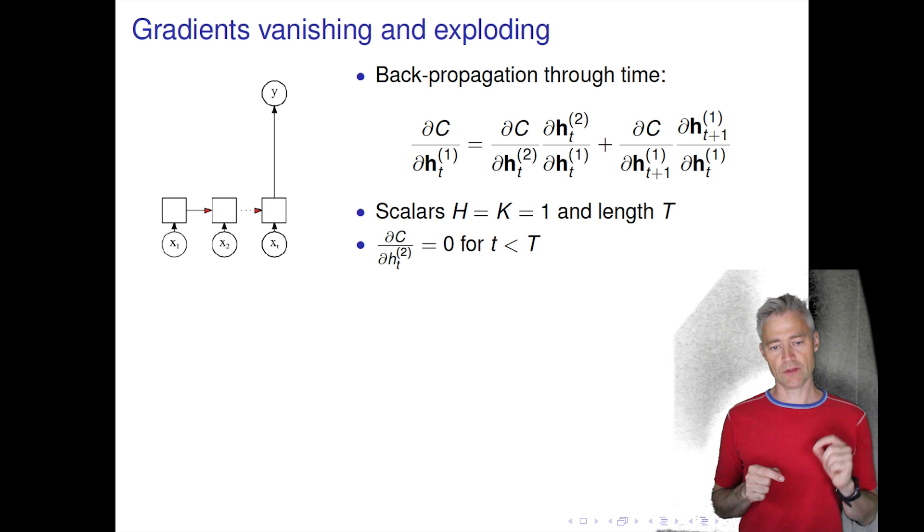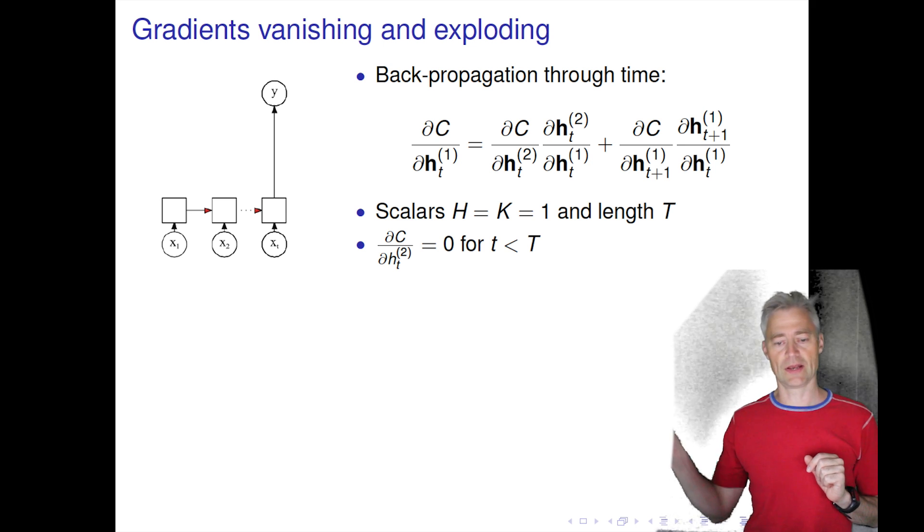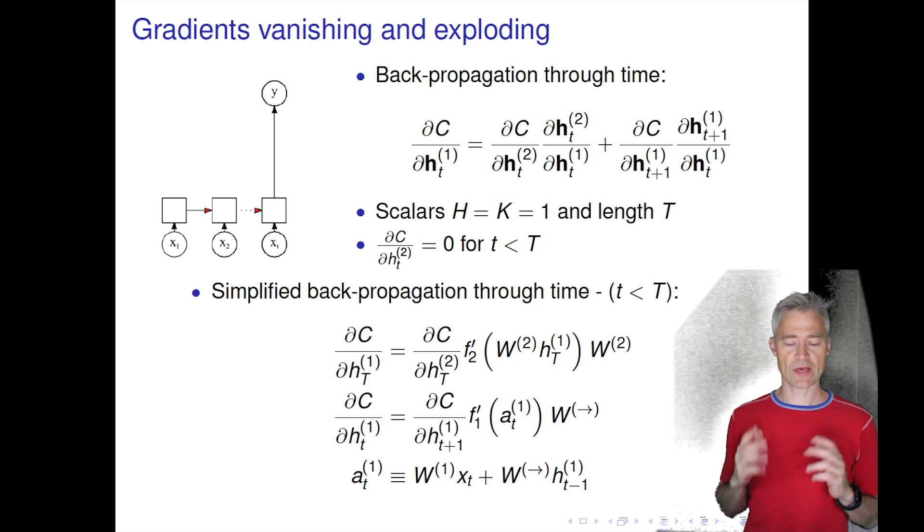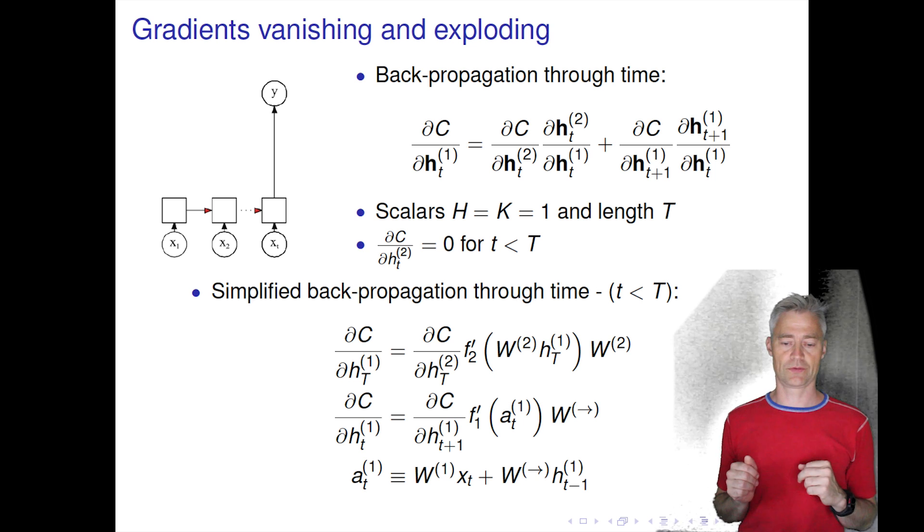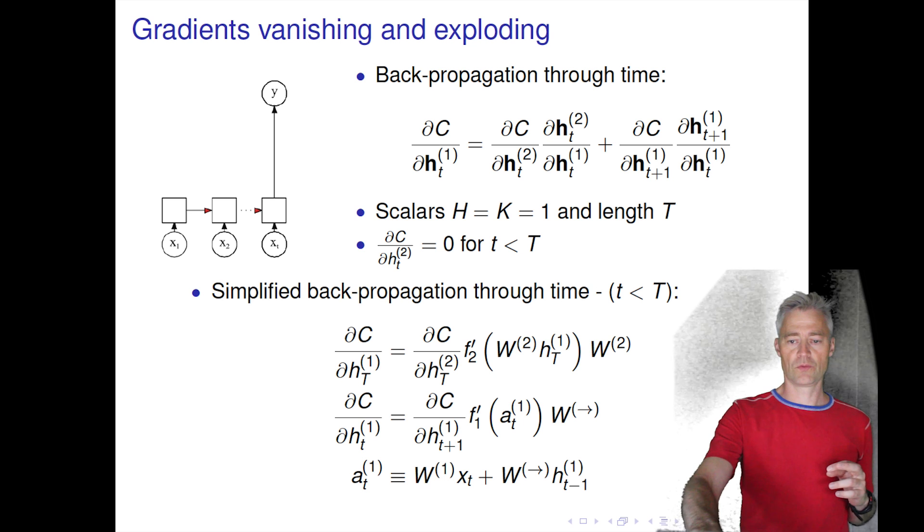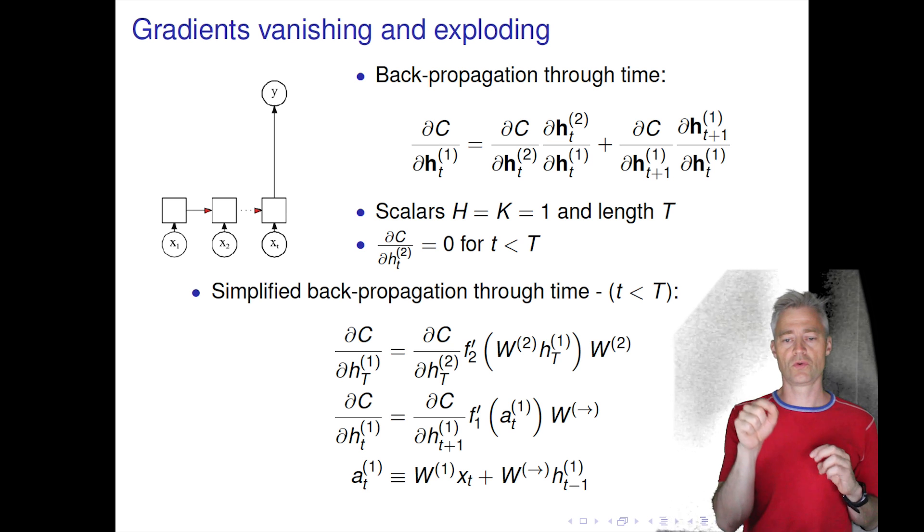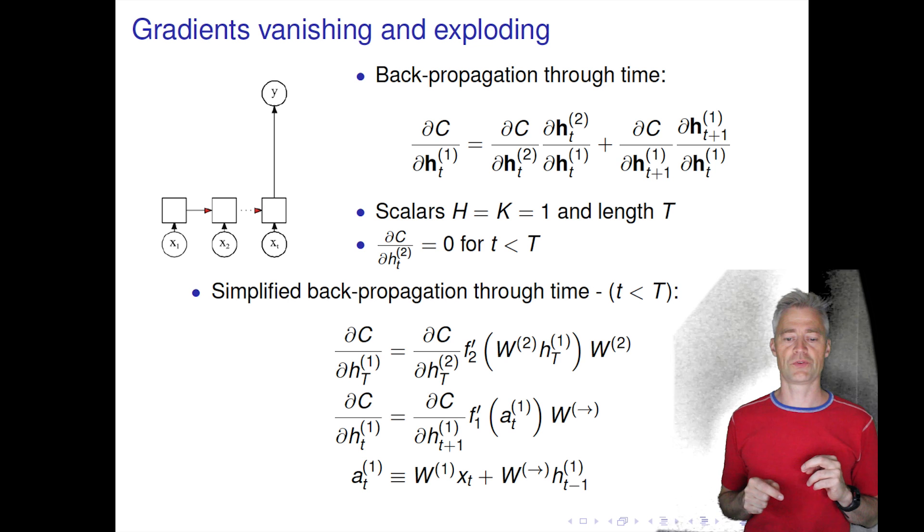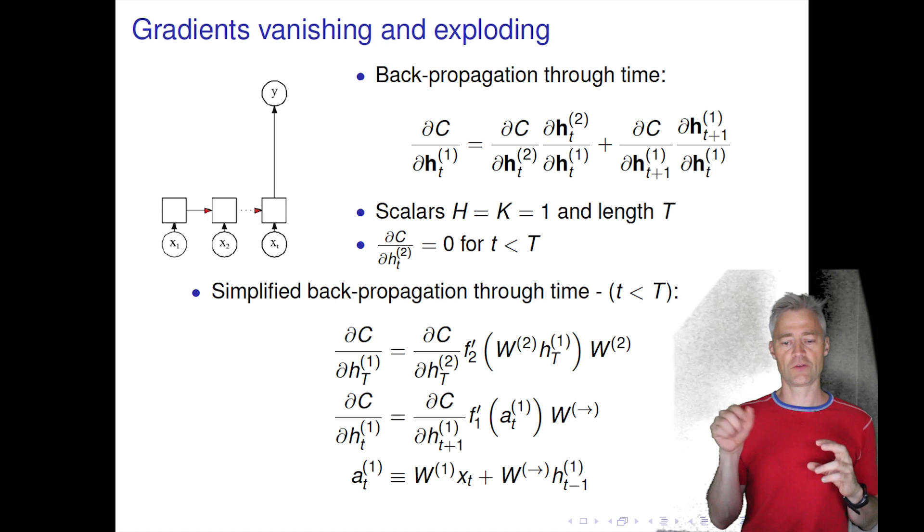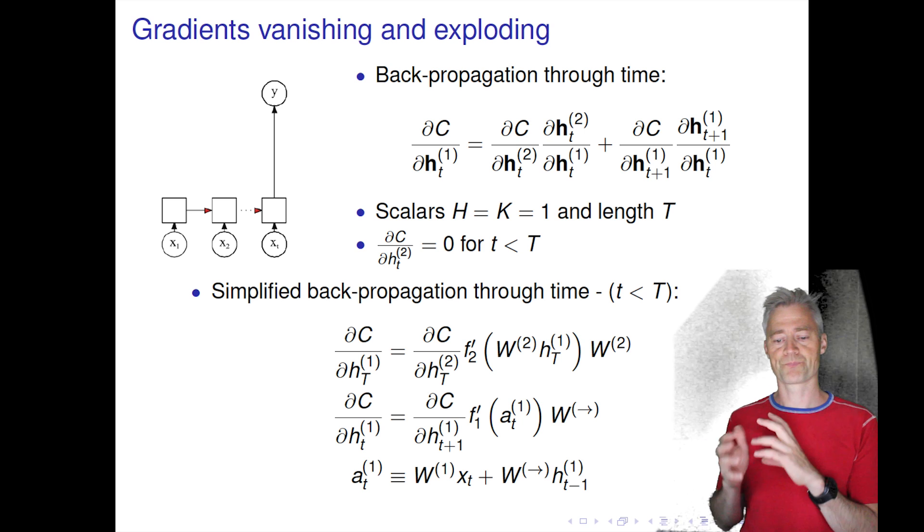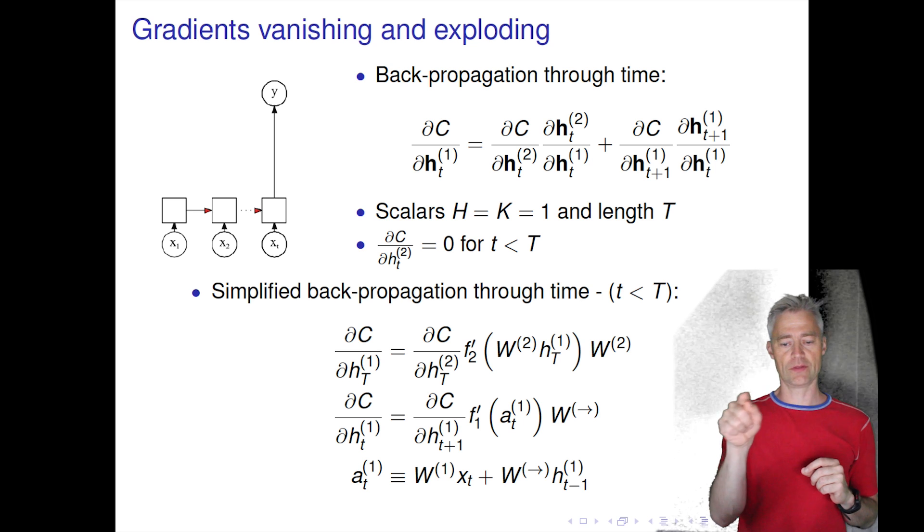In the second layer, the derivative is only different from zero at times equal to t, at the last time step. So now we have these simplifications, then we can simplify this backpropagation through time equations a little bit. And now I really try to rewrite this dh2, dh1 terms out explicitly where I've used again that I should take the outer derivative with respect to the activation function and then I should take the inner derivative where I take the derivative with respect to the argument of the activation function and then I get this result.